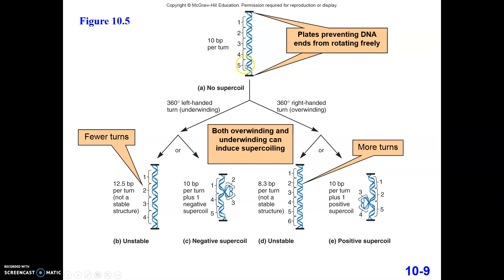If instead of unwinding we overwind the DNA — trying to make the helix even tighter — it helps to think of the DNA as a slinky. Twisting a slinky tighter would create a structure with more turns, about 8.3 base pairs per turn, which is unstable due to excess tension. As an alternative, the DNA can create a positive supercoil, twisting around itself to release that extra tension, allowing the DNA to form its native helical shape but in a much smaller space.